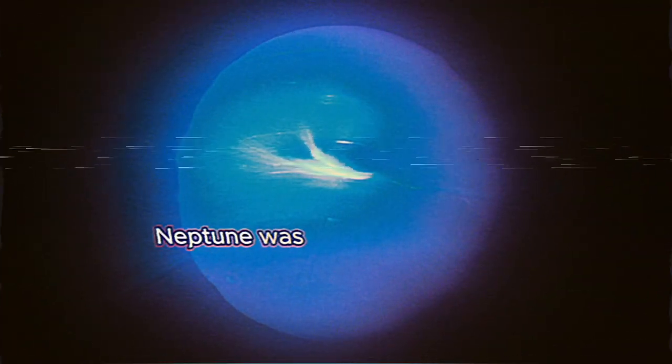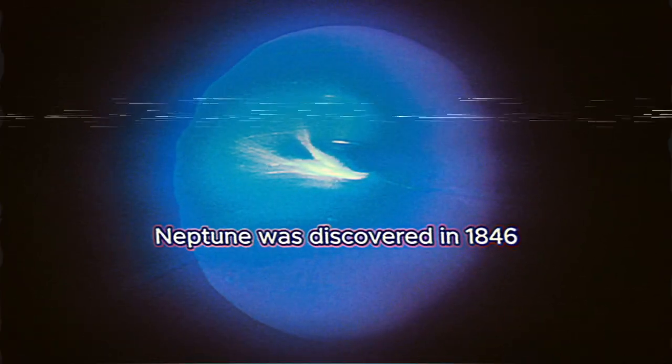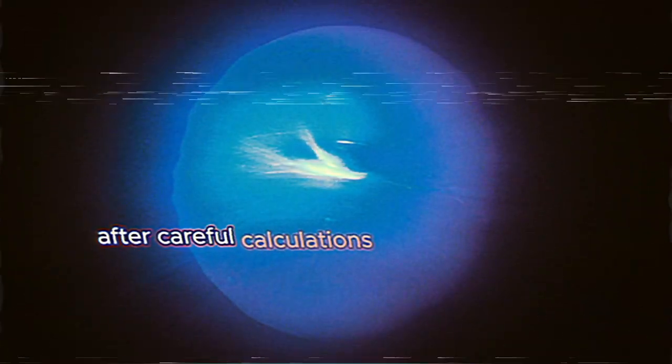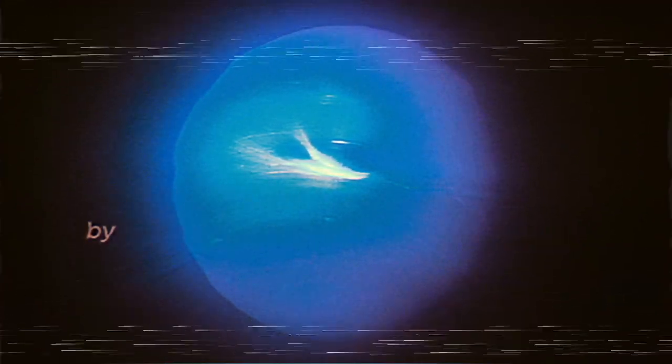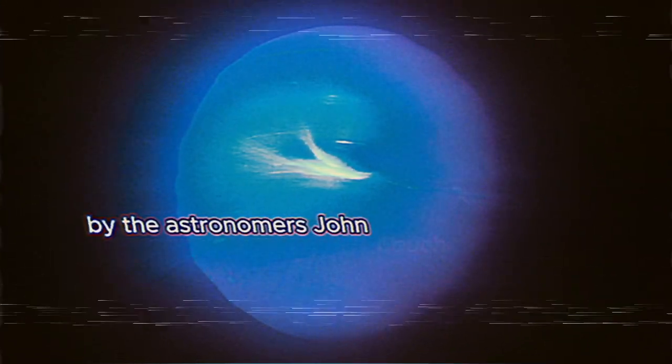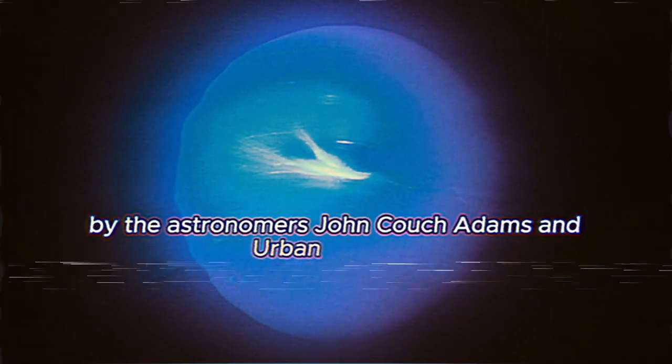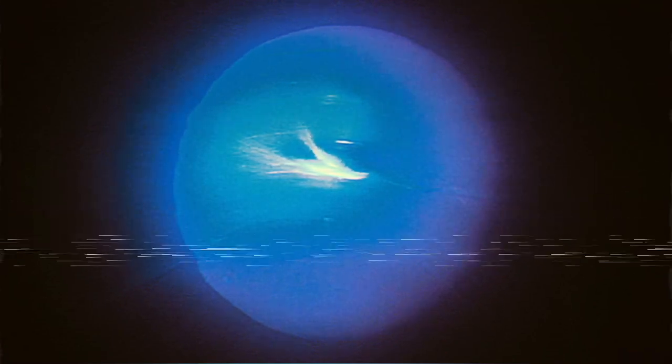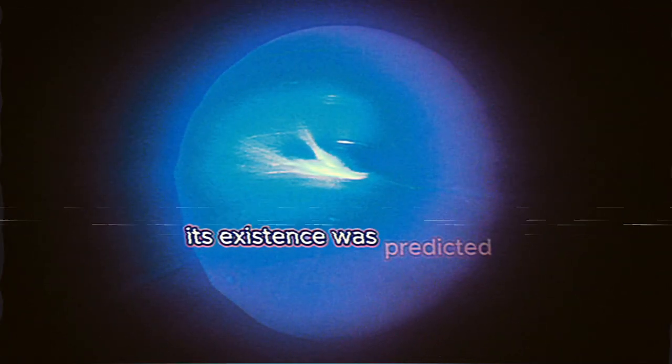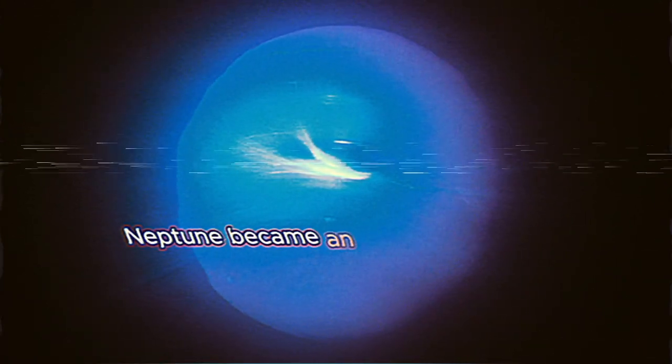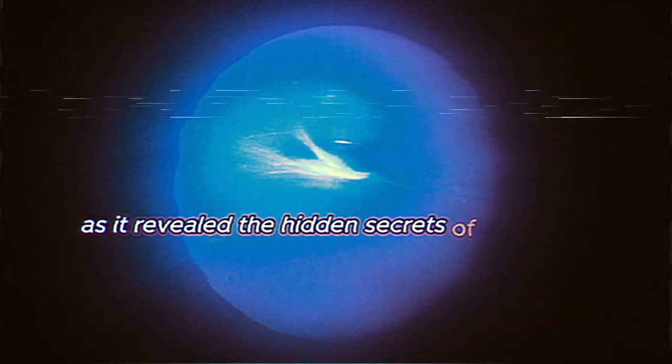Neptune was discovered in 1846 after careful calculations and observations by the astronomers John Couch Adams and Urban Le Verrier. Its existence was predicted, and once it was discovered, Neptune became an instant sensation as it revealed the hidden secrets of our solar system.